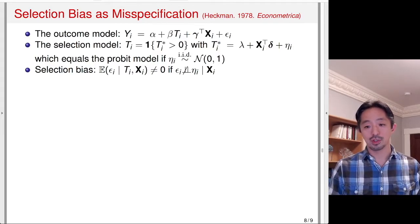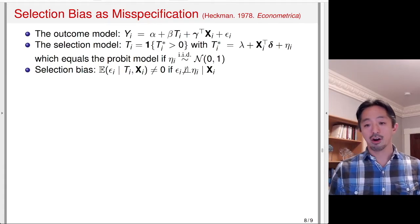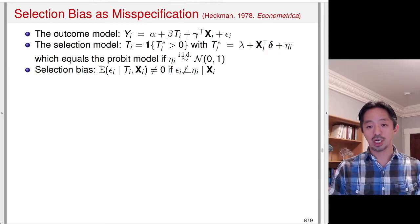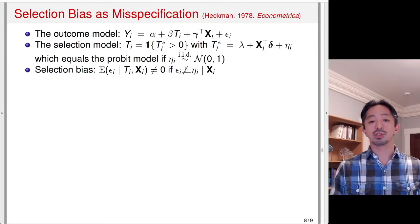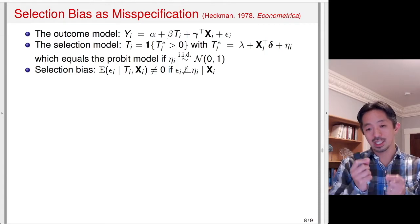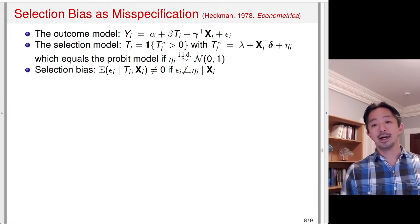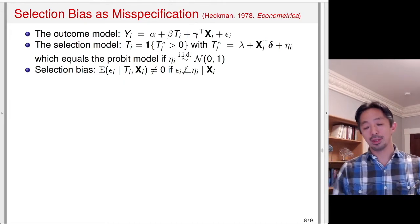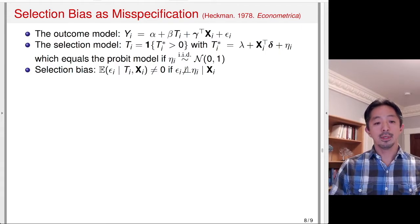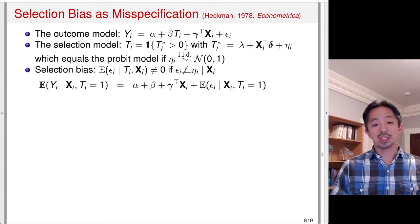The intuition is that some unobservable u_i appears in both error terms, leading to their correlation. As a result, even conditioning on X, ε_i and T are correlated, because T is a function of η, and η shares the component u_i that is also in ε_i.